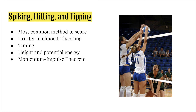Spiking, hitting, and tipping are the most likely methods a team will use to score. Scoring requires quick movement and a rapid transfer of energy. Players using greater force produce greater acceleration and momentum, creating larger displacement and a greater likelihood of scoring. Timing is crucial when hitting — the player must take off quickly, building kinetic energy with the goal of transferring it into potential energy. Potential energy is the product of the player's mass, gravity, and height of the jump. The shorter the contact time between the player's hand and the ball, the larger the force exerted, creating greater overall momentum.